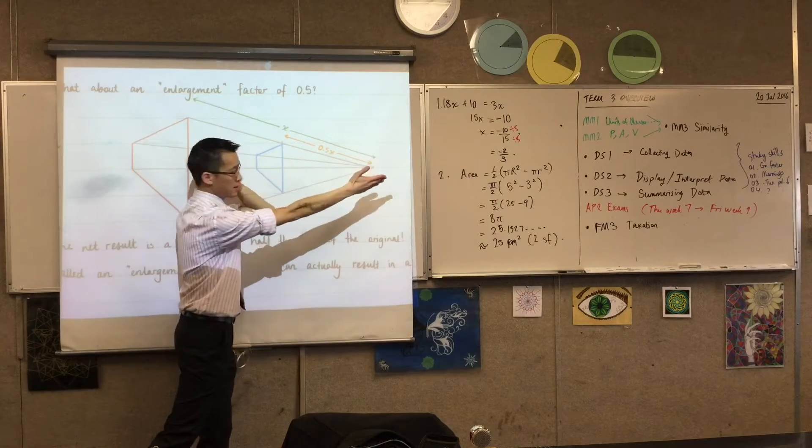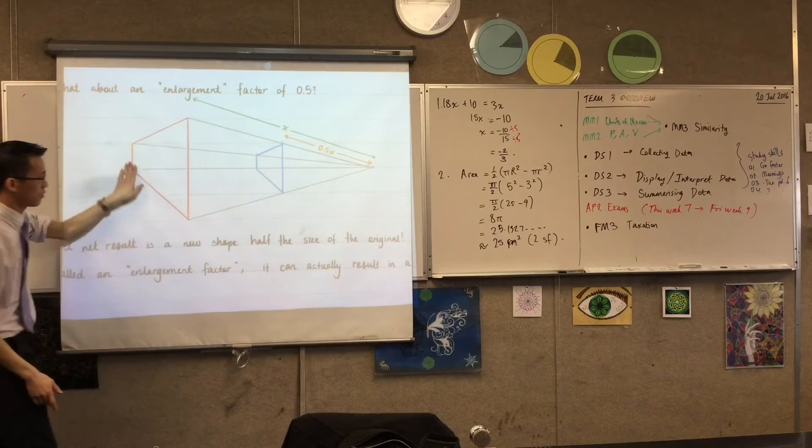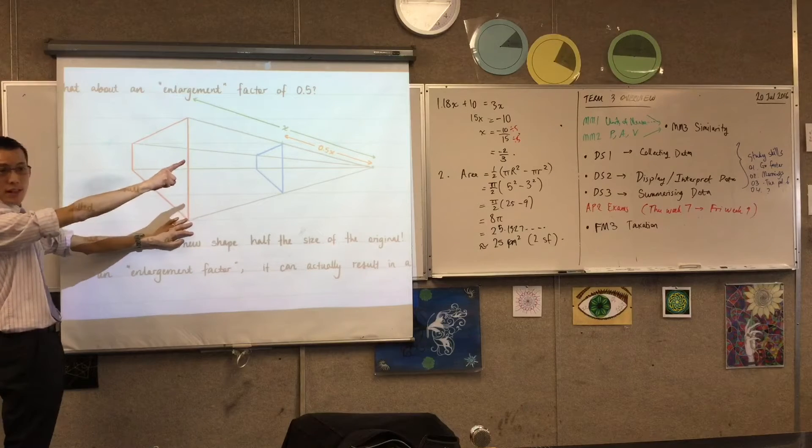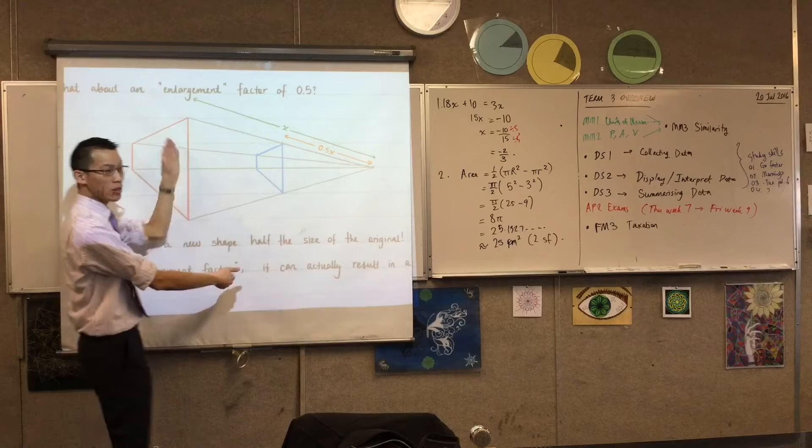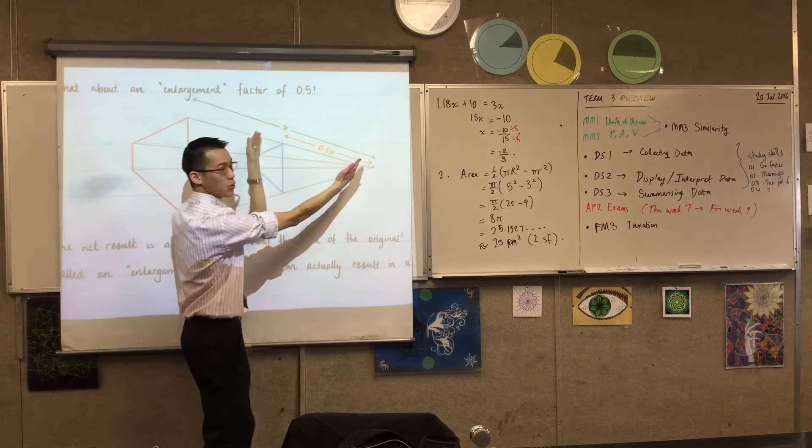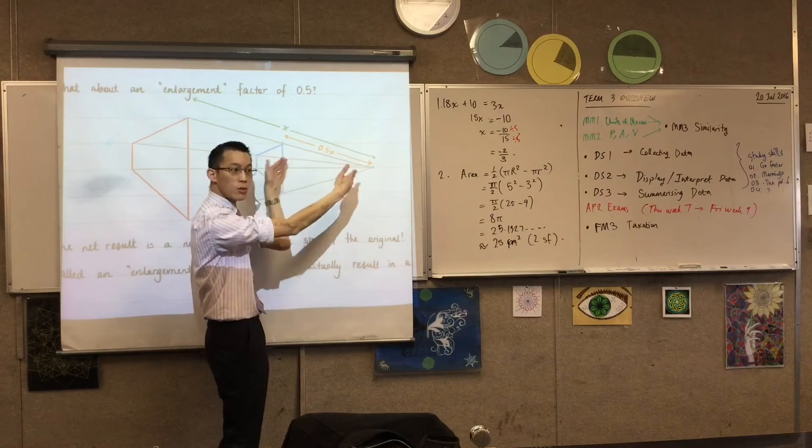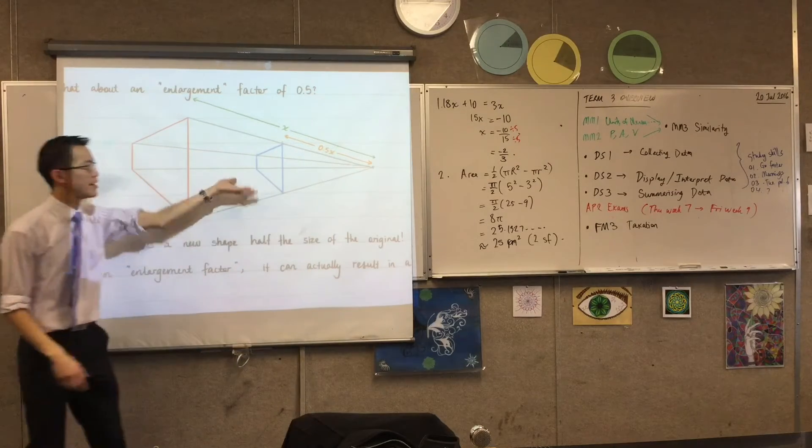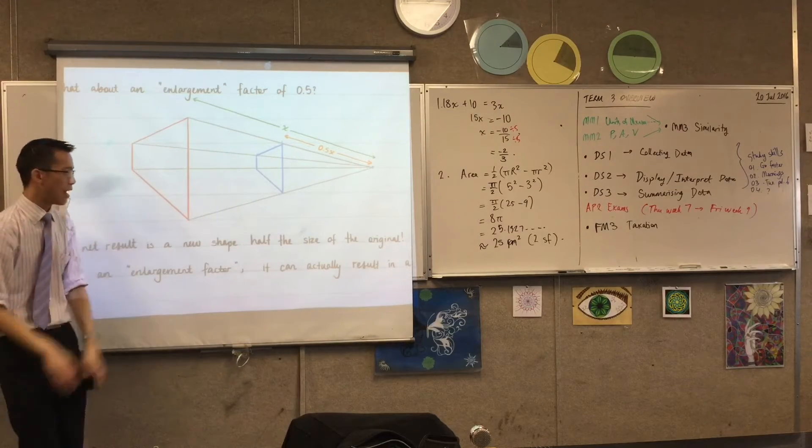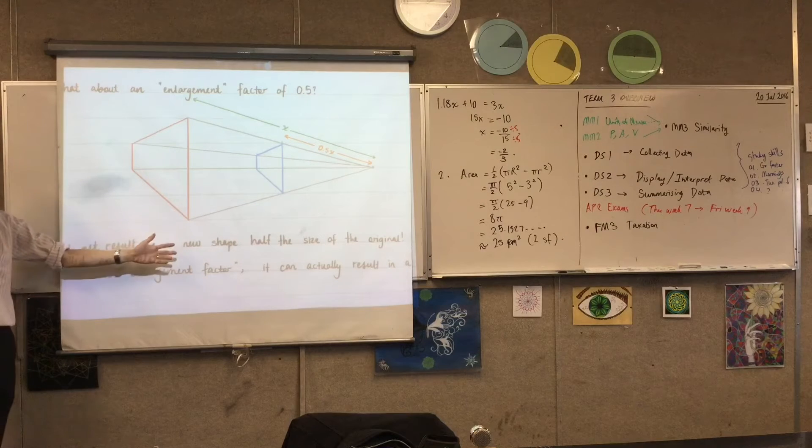I take this distance from each of the features, 1, 2, 3, 4, to the center of enlargement, and for the new version, the new shape, I want the ratio to be 1 to a half. So that's what makes it closer in. By being closer to my center of enlargement, you are necessarily smaller, and that's why you get a new shape that's half the size of the original.